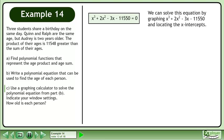We can solve this equation by graphing x³ + 2x² - 3x - 11,550 and locating the x-intercepts.